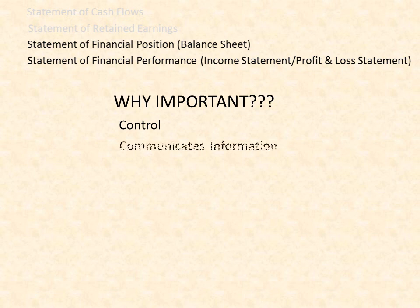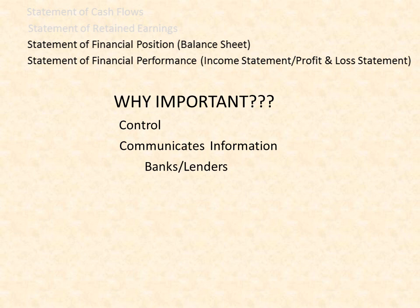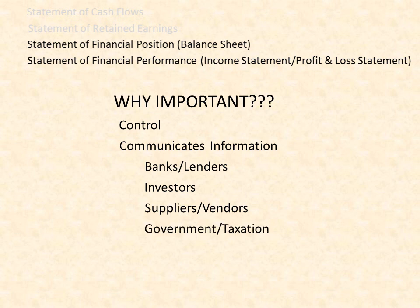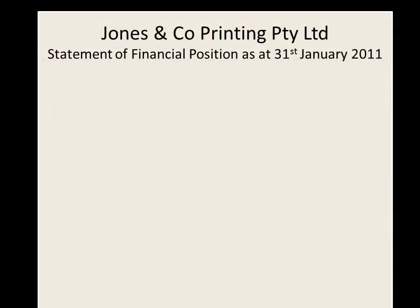The second reason is that these statements communicate information to outside parties. Banks and other lenders would be interested in these statements to determine how risky a company is and whether they should lend the company money. Investors would look to see whether a company is profitable and decide whether to invest. Similarly, suppliers and vendors could decide whether to extend credit to the company by assessing the likelihood of repayment. Government departments such as the tax department would check these statements to ensure that correct taxes are being paid. And for larger companies, the public and media would also scrutinize a company's financial statements.